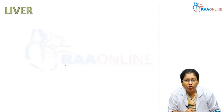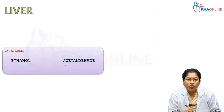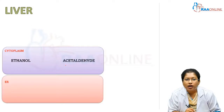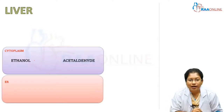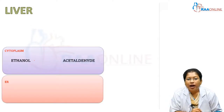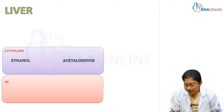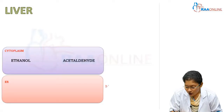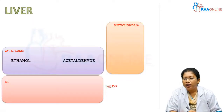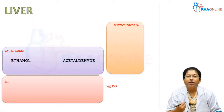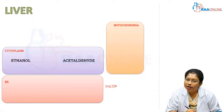The metabolism takes place in the liver. In the cytoplasm, ethanol is oxidized to acetaldehyde. The endoplasmic reticulum contains the MEOS system. And in the mitochondria, the aldehyde oxidation takes place.